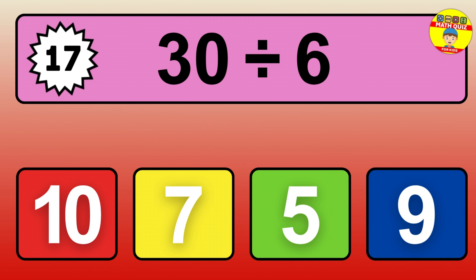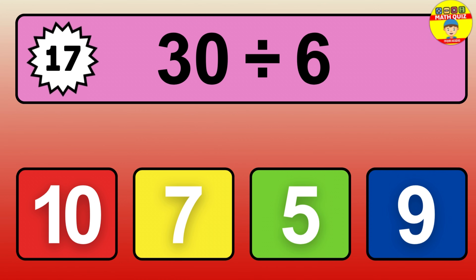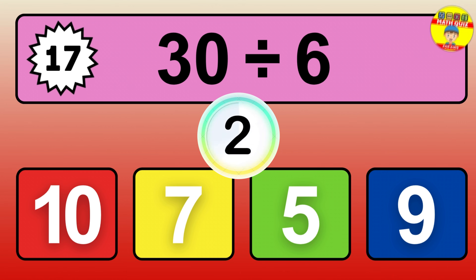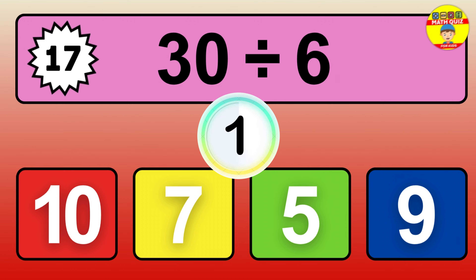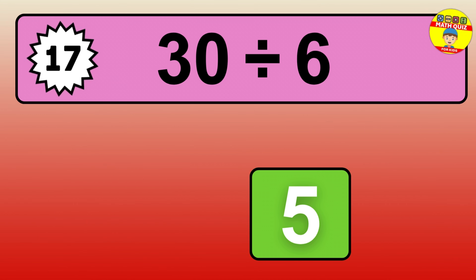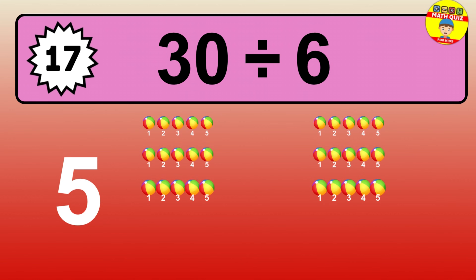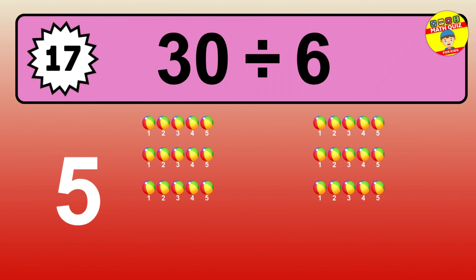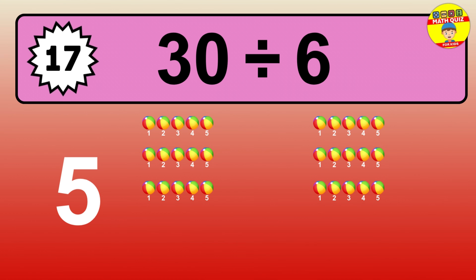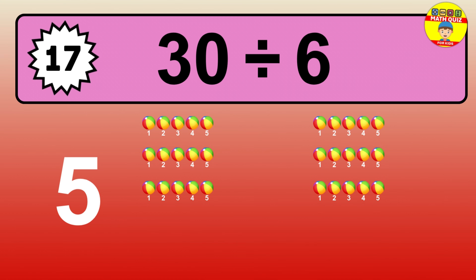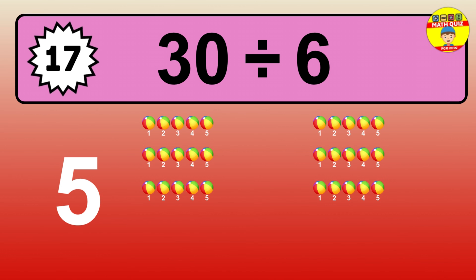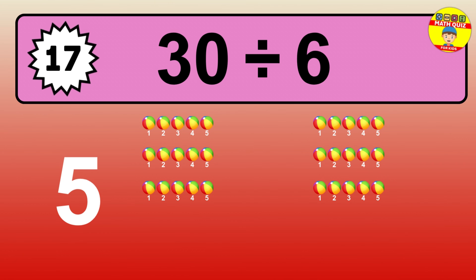30 divided by 6 is… time to think. Let's go to the solution. Divide the number 30 by 6. Each group contains 6 units. So, dividing 30 by 6 results in 5 equal groups. Thus, the result is… 30 divided by 6 equals 5.